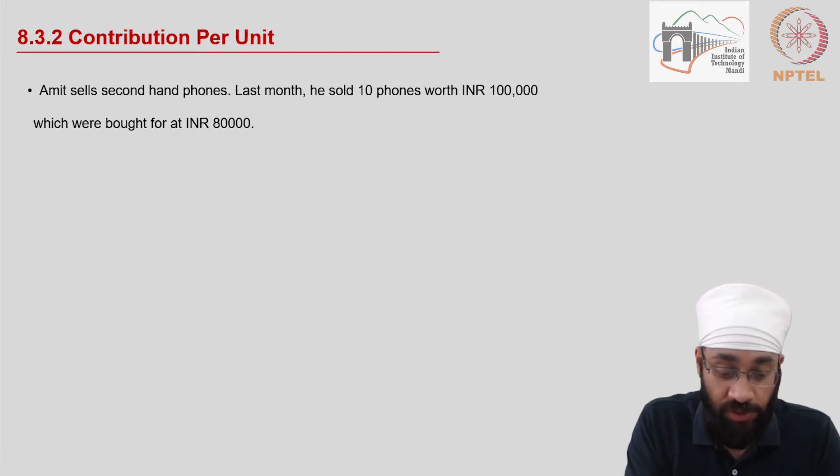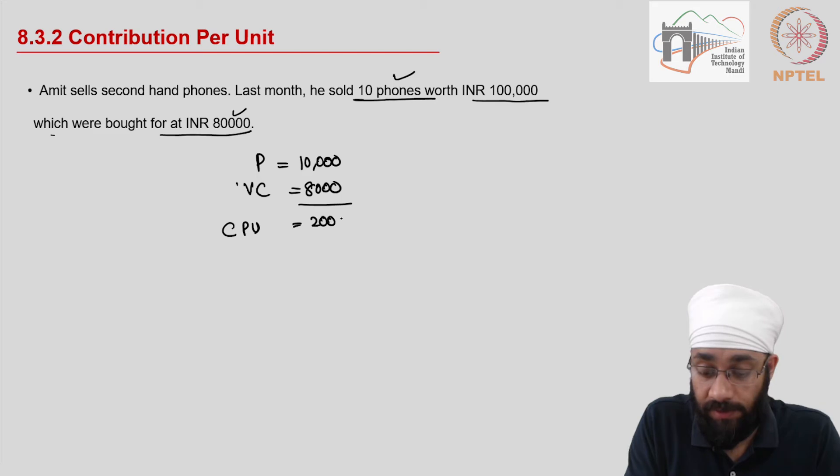So in the previous question, let's say that 10 phones were being sold for 100,000. So price per unit comes out to be 10,000. And these phones were bought at 80,000, so the variable cost per unit comes out to be 80,000 divided by 10, which is 8,000. And now contribution per unit comes out to be 2,000. That's it. This is the concept of contribution per unit.